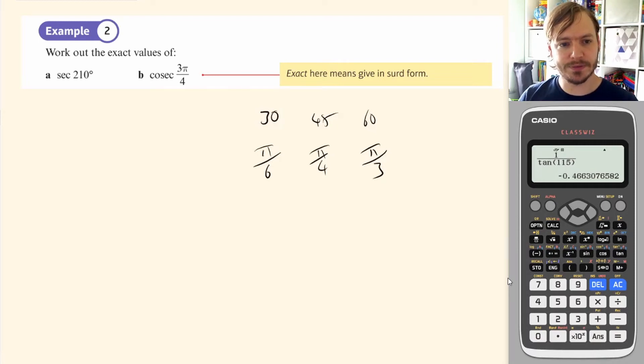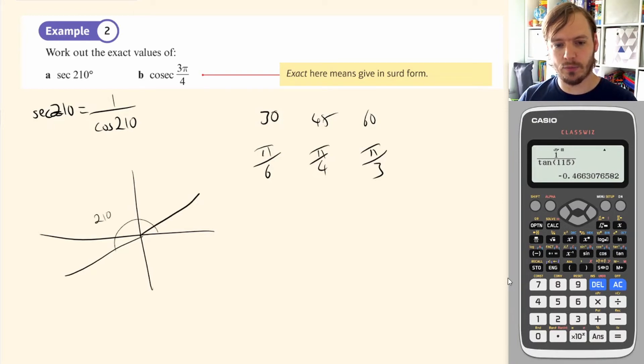sec of 210, sec of 210 is 1 over cos of 210. And if we remember that 210 is down here on our CAST diagram, which means it is the negative of cos of 30, right? So remember that cos is this value. So cos of 210 is negative of cos of 30.